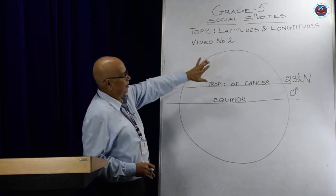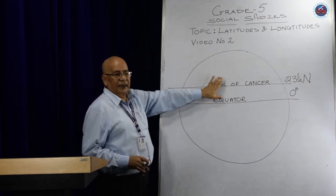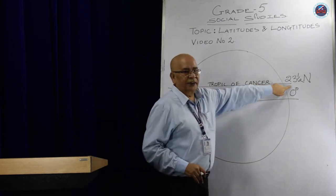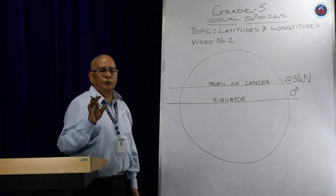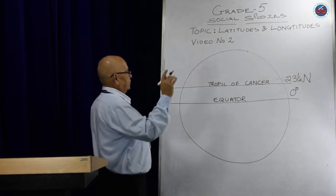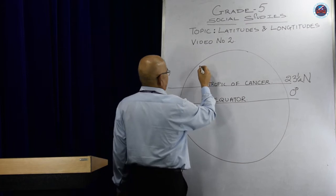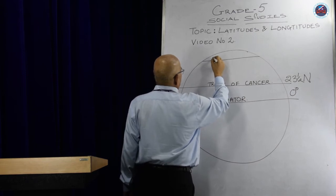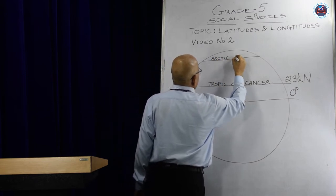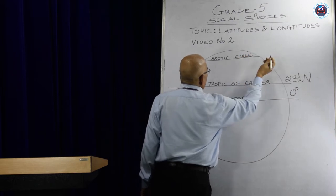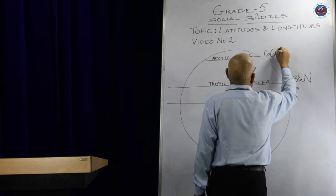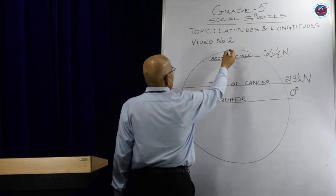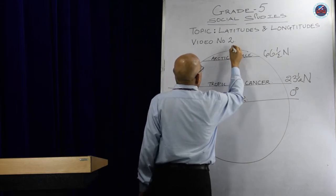Whenever we are giving the degree or the distance from one to the other latitudes, we have to say and tell what the degrees are. Another important latitude is the Arctic Circle, which is at 66 and a half degrees north latitude. And this is the north pole.